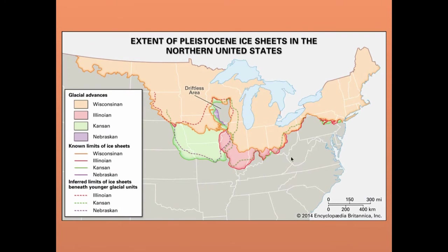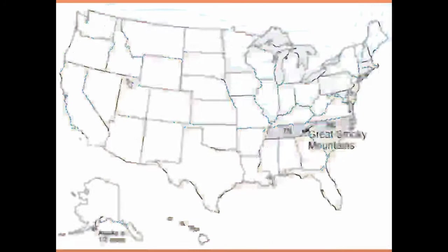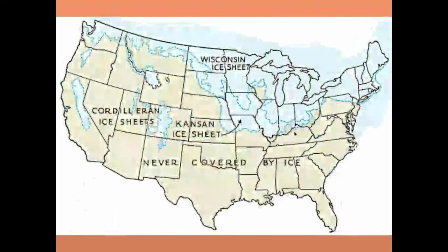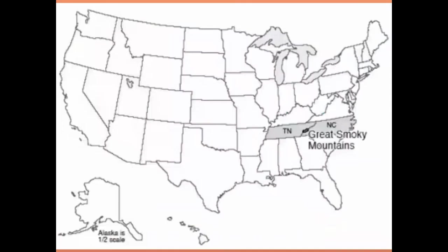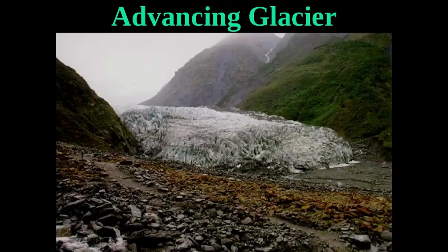The Great Smoky Mountains in Tennessee have some of the greatest biodiversity in the United States. Species chased south by glaciers found compatible climate in the high-elevation mountains of Tennessee and stayed there. The Greenland Glacier advancing today looks dirty from all the material it has plucked and transported — and those sediments look unsorted.